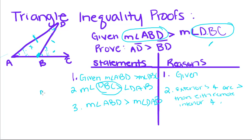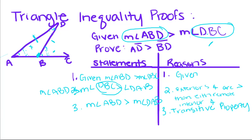All we're doing is sliding this onto the end — it's greater than that, which is greater than that. That's the transitive property: if A equals B and B equals C, then A equals C.